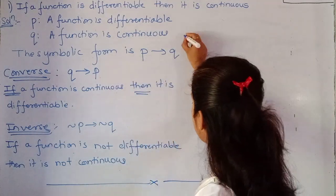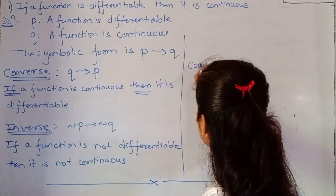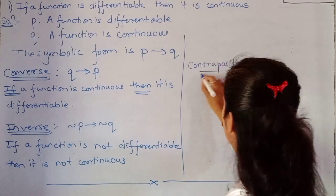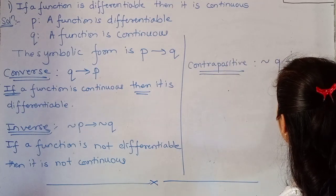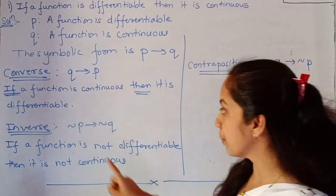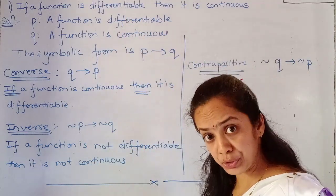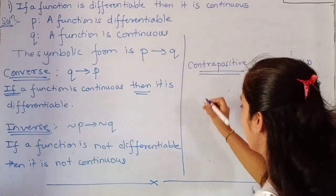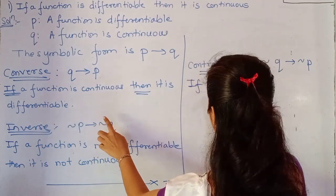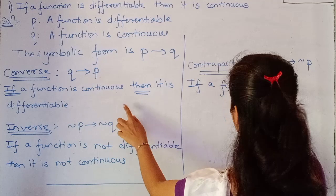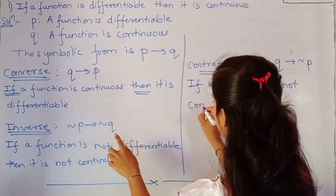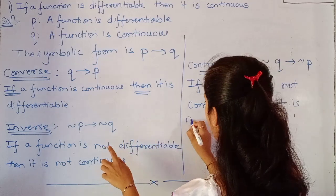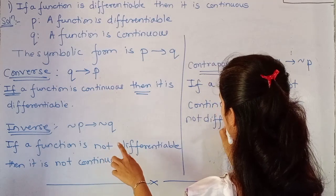And the last one, contrapositive. For contrapositive, what we have to do is negation Q implies negation P. Just like we did in inverse where we put 'not' in both parts of the question, in contrapositive we take the converse and then put 'not' in both parts. If a function is not continuous, then it is not differentiable. Very simple.